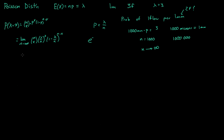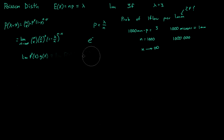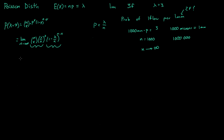Let's remember that the limit of f(x) times g(x) is equal to the limit of f(x) times the limit of g(x), so we can break this apart into separate pieces. Let's focus on this piece: the limit as n approaches infinity of 1 minus lambda over n, to the power of n minus x.